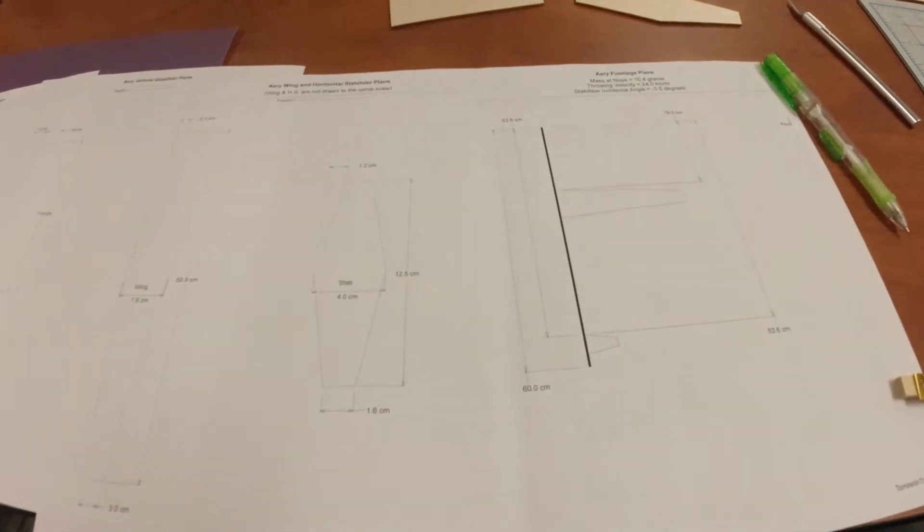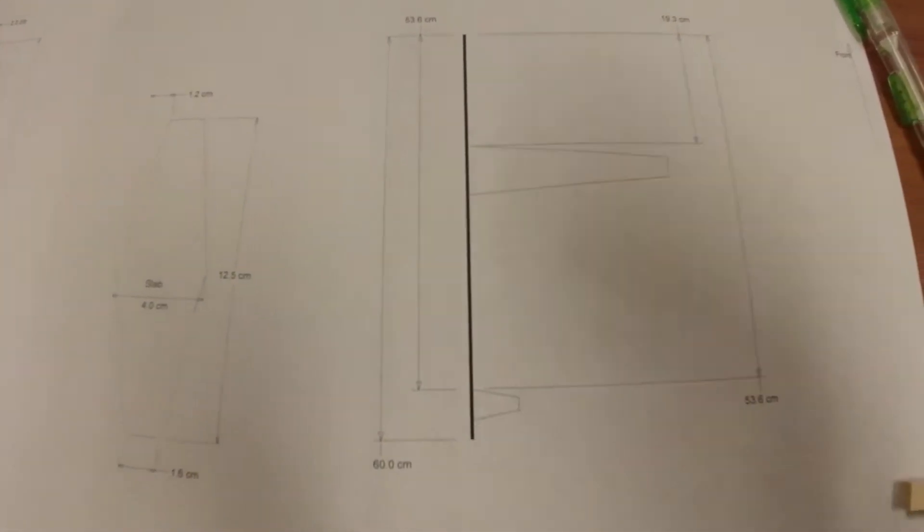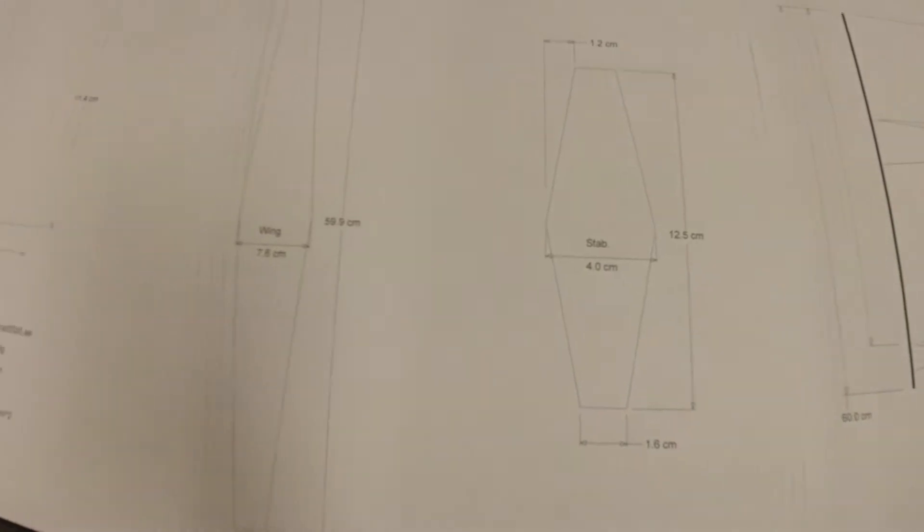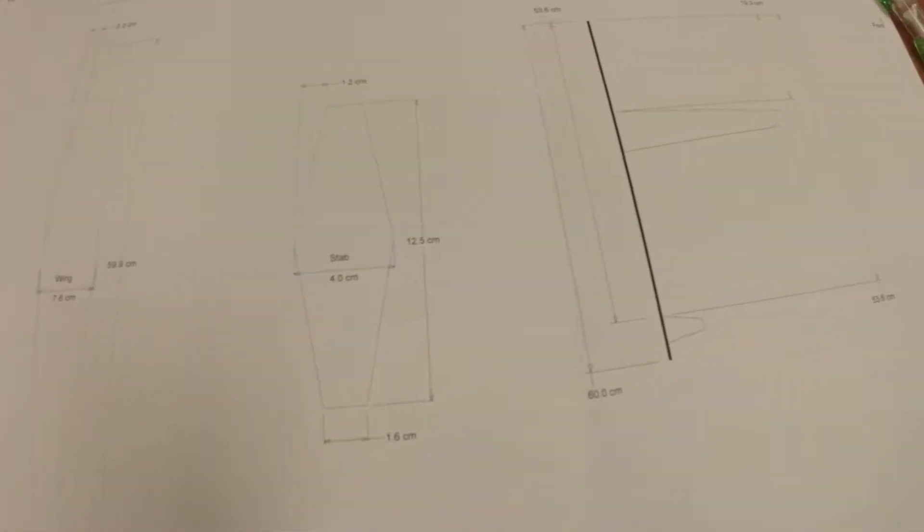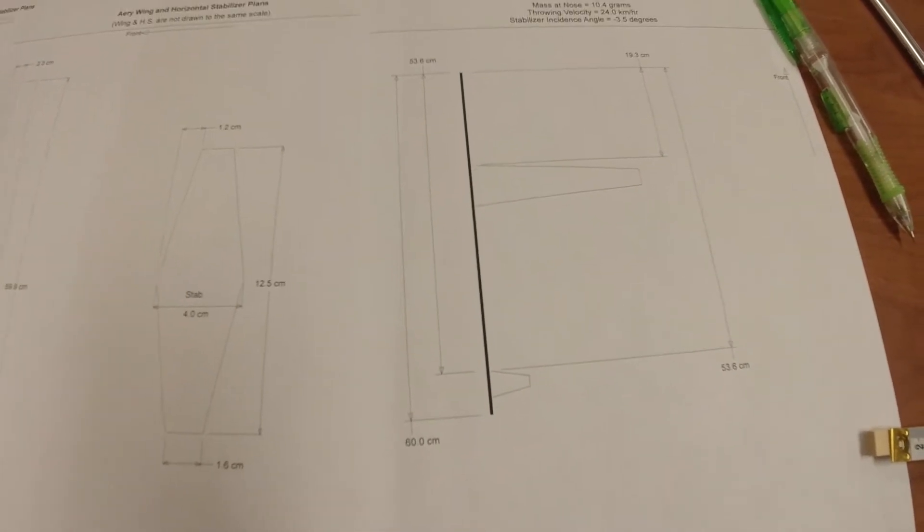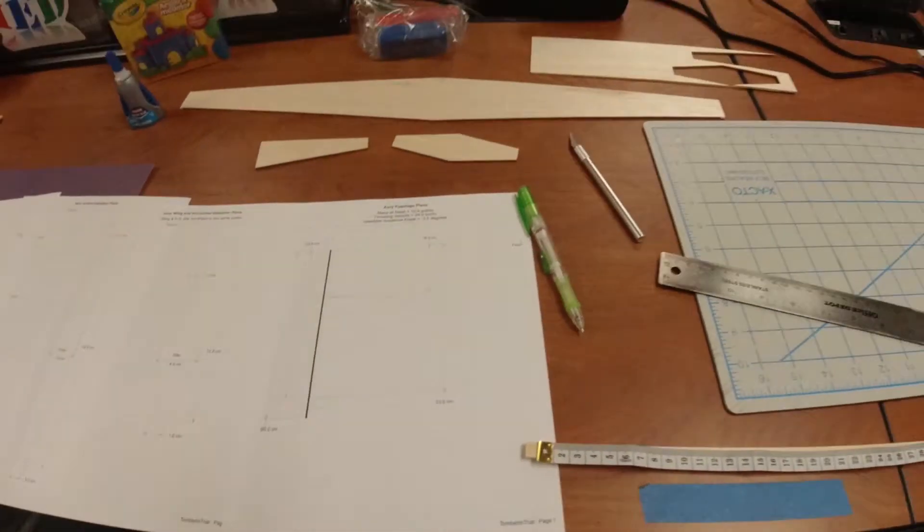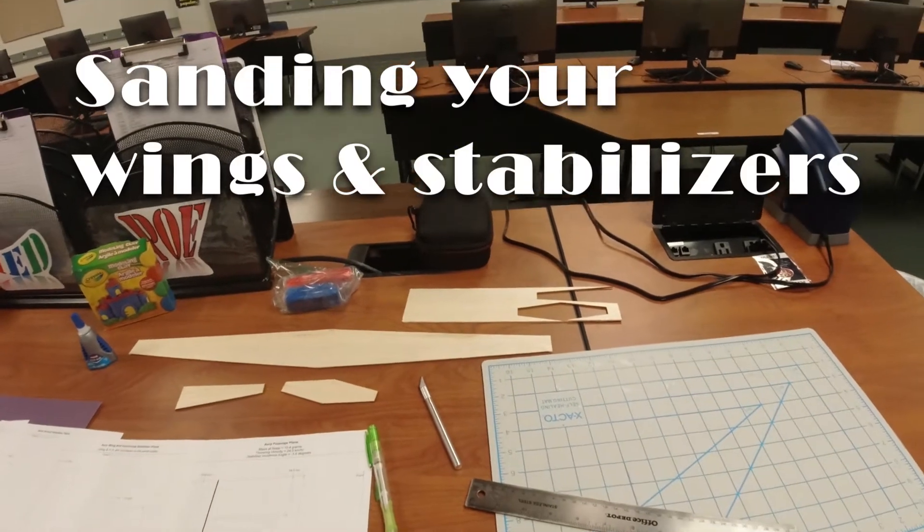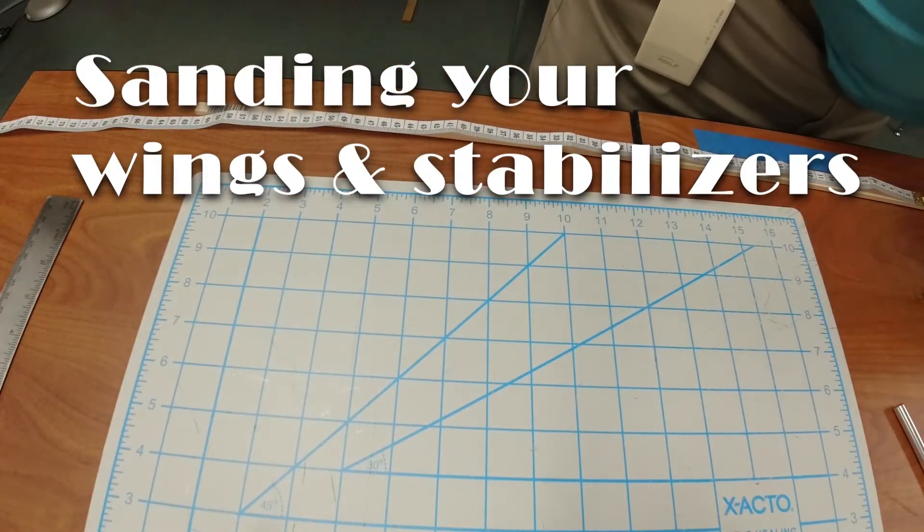On the plans, if you look at them, you should have all the things where it tells you exactly where everything goes. You can mark on your fuselage, cut its length, and then mark where everything fits. That's how you get set up ready to get started.